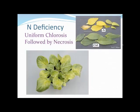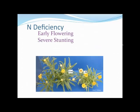Let's look at nitrogen deficiency. We have uniform chlorosis starting at the bottom, and when it progresses far enough we'll get some necrosis. In this photo, we see severe stunting with the plant on the right that received no nitrogen, and notice how far along in flower it is — all flowers fully open — compared to the control plant where only buds are just starting to show color. That's the early flowering symptom.